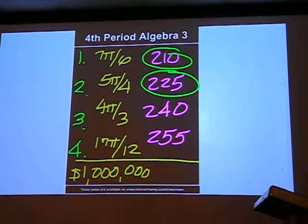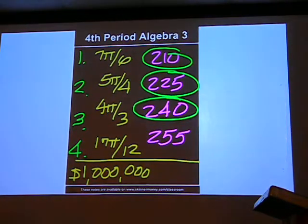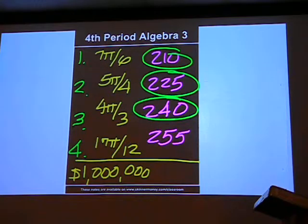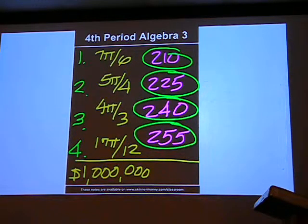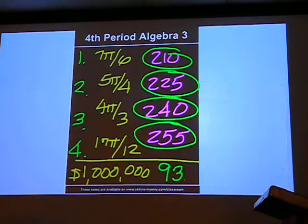435 plus 240 is going to be 675. 675 plus 255 will give us a final answer of 930.